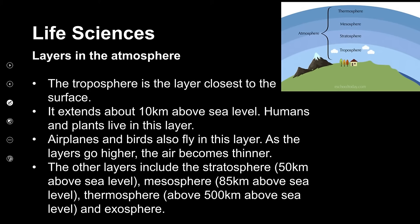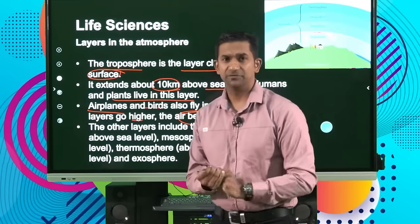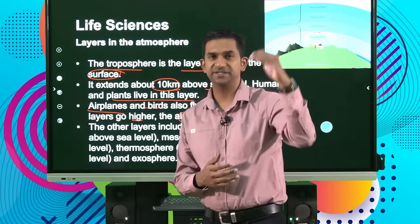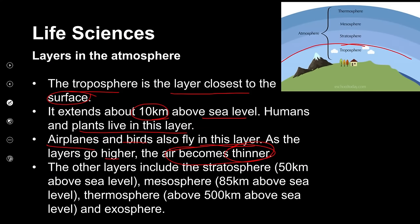The troposphere is the layer closest to the surface of the earth, extending to about 10 kilometers above sea level. Humans and plants live in this layer, and when we look at planes and birds, they also fly in this layer. As the layer goes higher, the air becomes thinner — we experience this as a concept in people involved in mountain climbing. As altitude increases, the air becomes thinner, referring to the depletion of the level of oxygen in the atmosphere.